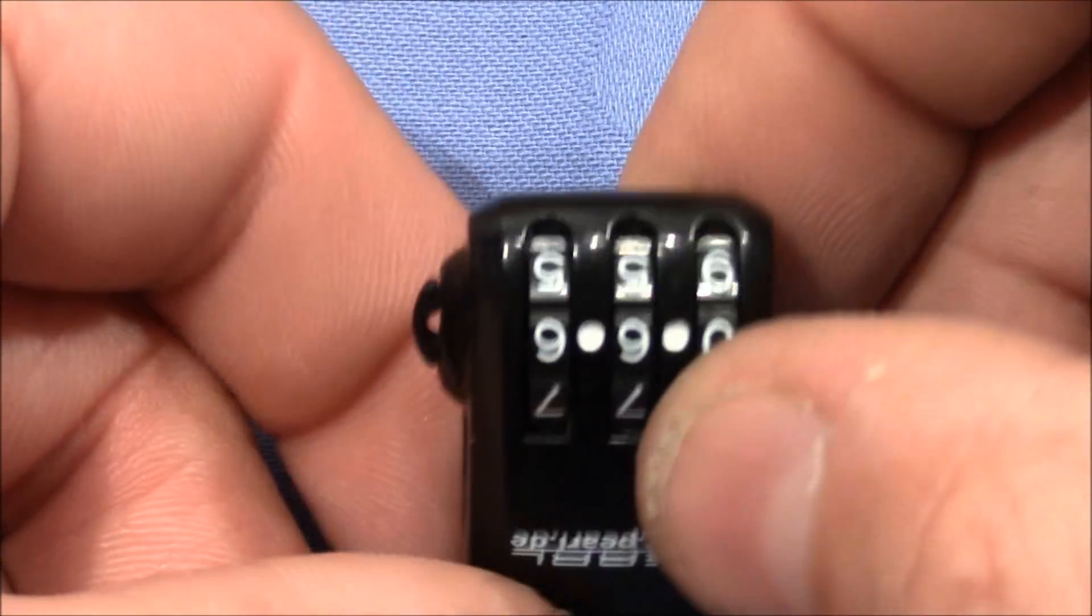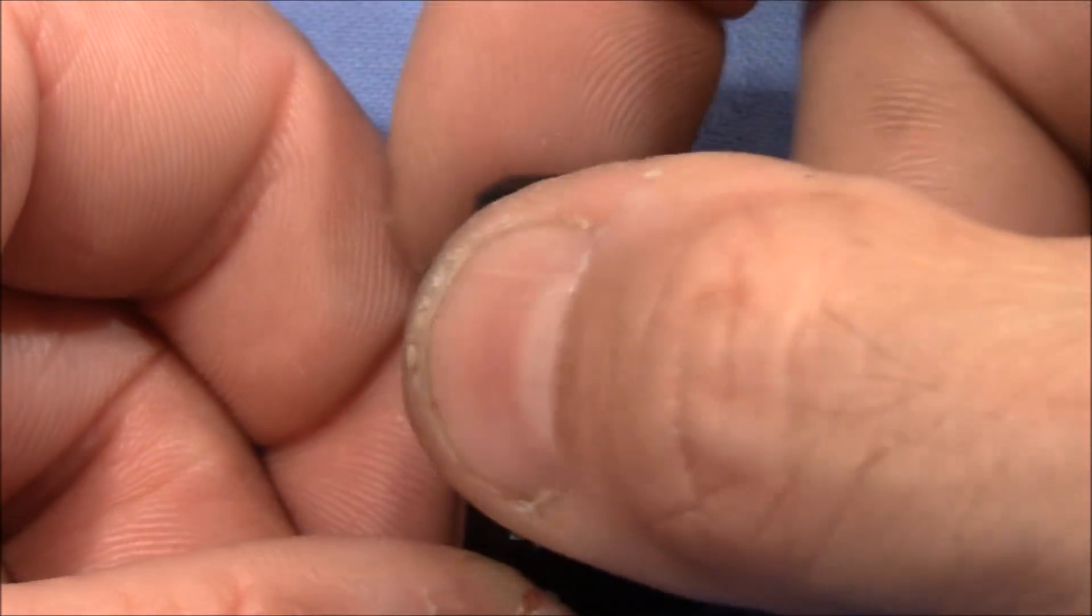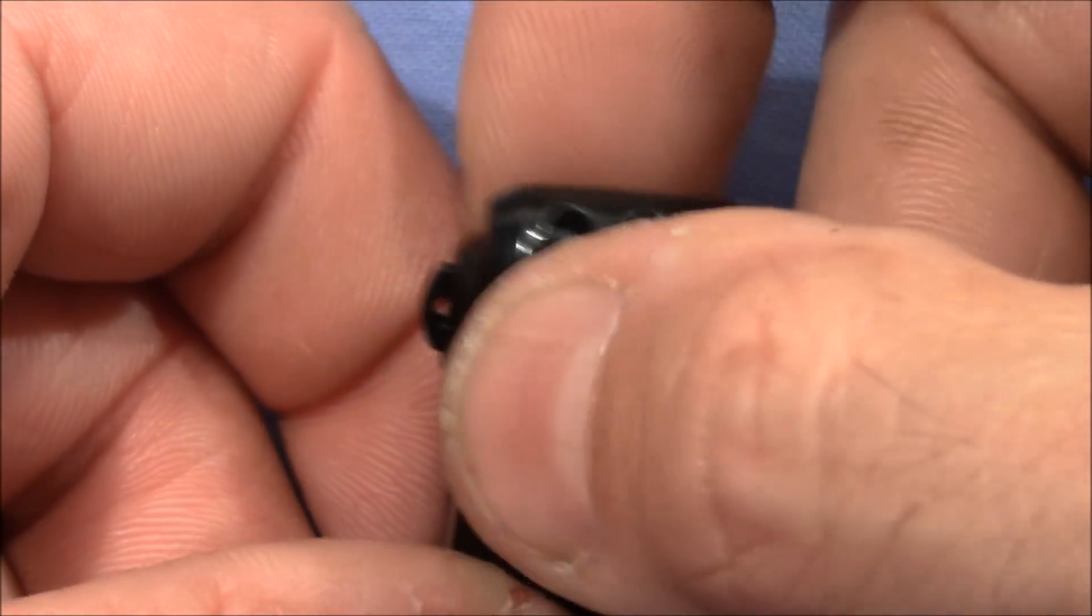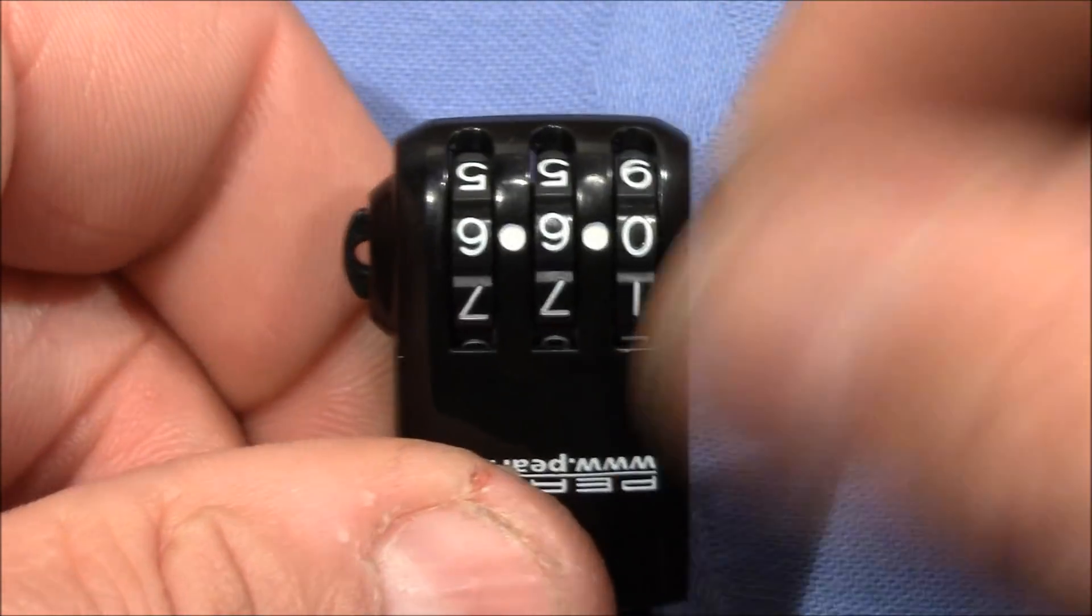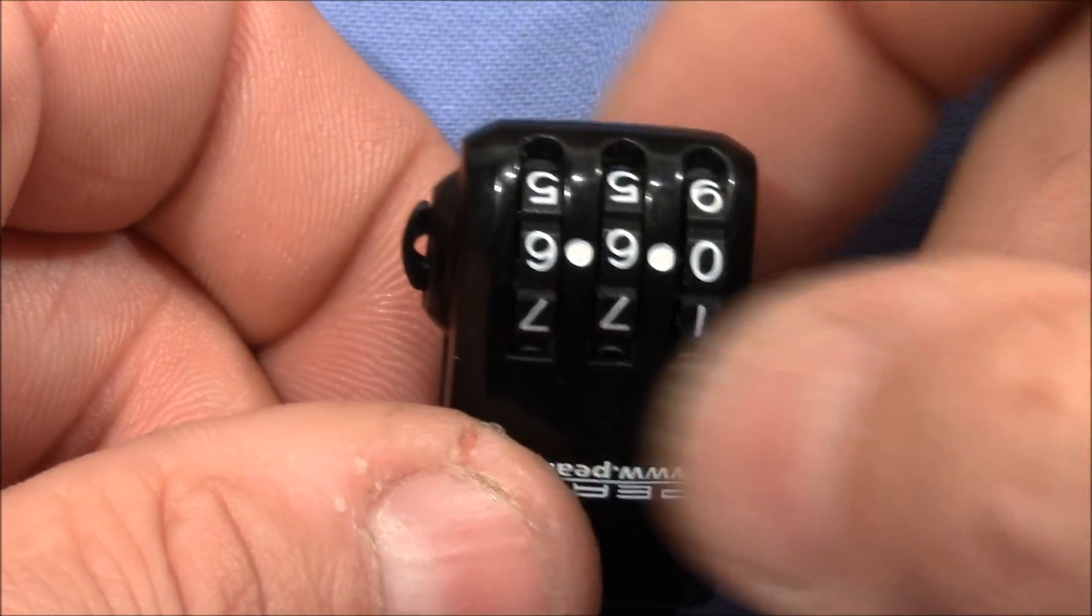So now what I did wrong also: I didn't look at the actual numbers. I turned them and I thought I would turn it by one, but I accidentally turned some wheels by two. So this is not the right code because the gates have to be aligned somewhere else in the lock.